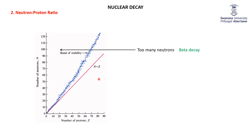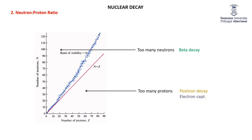Conversely, if we're over this side of the band of stability, then we have too many protons. What do we know that can reduce the number of protons or maybe increase the number of neutrons, just getting us closer to the nice ratio for the band of stability? Well, positron decay or electron capture will effectively turn a proton into a neutron. So the neutron-proton ratio is all important for those smaller nuclei.